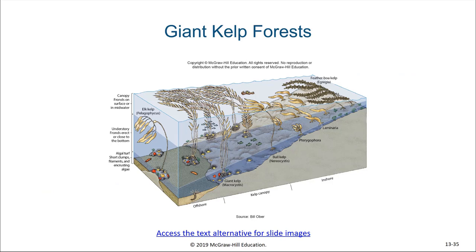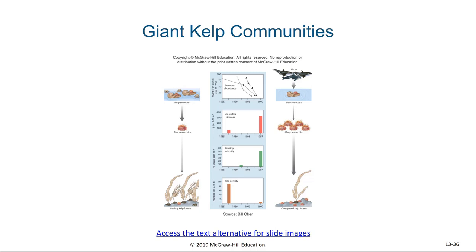We see zonation in kelp forests not only in distance from shore but also depth in the water. As we saw in seagrass meadows, sea otters also play a key role being a keystone predator in these communities. They're able to keep the urchin numbers down resulting in lush kelp density. However, as the number of sea otters drop in abundance, either from predation by other predators or because of humans, this results in an increase in the number of urchins and therefore a decrease in the robust diversity of the kelp forest.